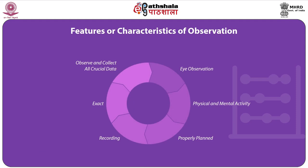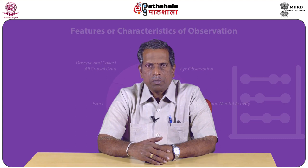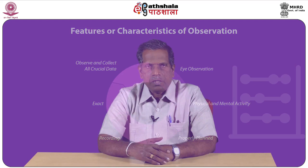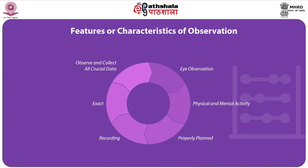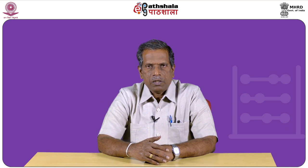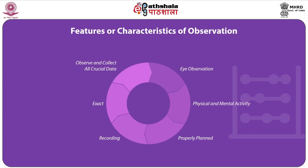The basic features or characteristics of observation are firstly, eye observation. Observation mainly involves the use of eyes, and thereby researchers who use this method only trust what they observe with their own eyes. Secondly, physical and mental activity. Besides eyes, sense organs of the researcher also play a crucial role. During observation, the researcher has to use sense organs not only for seeing and hearing but also to keep in mind the whole set of observations for in-depth analysis. Thirdly, observation should be selective and purposeful.